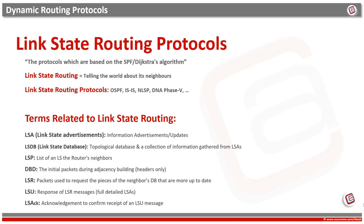The link state routing protocols include OSPF and ISIS — two OSI and IP protocols — then NLSP, DNA Phase 5, and so on. The most common are ISIS and OSPF, with OSPF being the first in preference. In link state routing protocols, every node constructs a map of the connectivity to the network in the form of a graph, showing which nodes are connected to which other nodes.